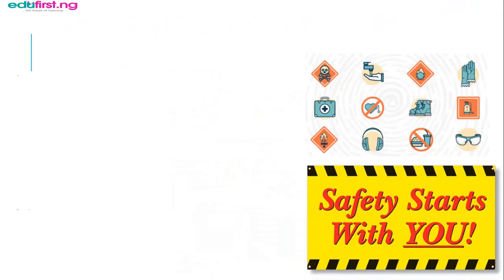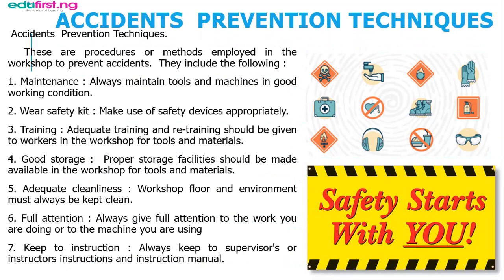There are prevention techniques also put in place in the workshop to prevent accidents. The first one is maintenance — always make sure you maintain your machines and keep them in good condition. Always make sure you wear your safety kits so that you can prevent any unhealthy occurrence. Also make sure that whatever machine you are working on, you are well trained on how to use it. Also make sure that you give whatever you are doing your full attention, because if you are working on a machine and you get distracted, it could cause an accident.